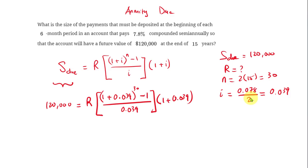And then 1 plus 0.039. Now if we use the calculator to calculate everything here, you should get around 57.308330. And then this number, of course, you have to multiply by R again, and that will equal to $120,000.